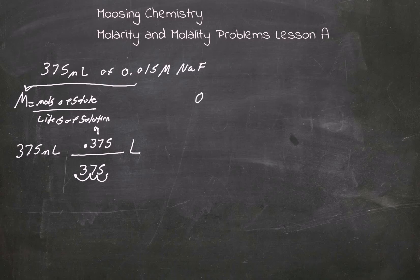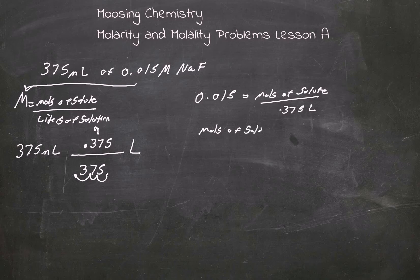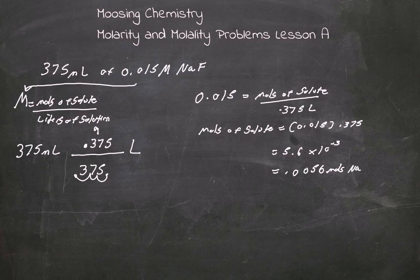We set up the equation: 0.015 equals moles of solute over 0.375 liters. So moles of solute equals 0.015 times 0.375, which gives 0.0056 moles of NaF.